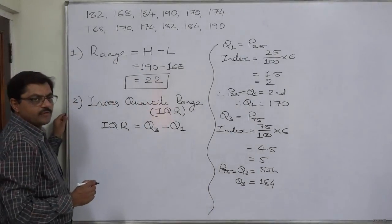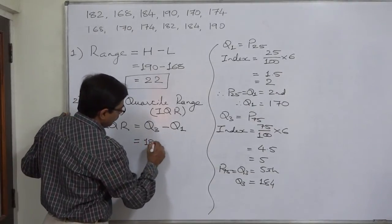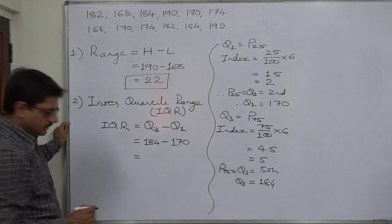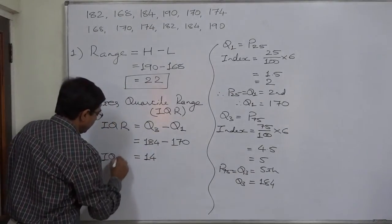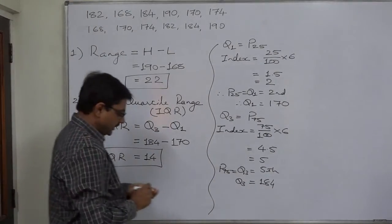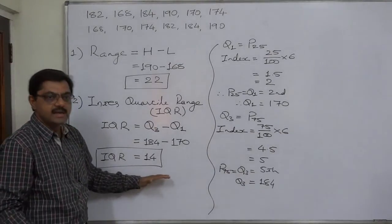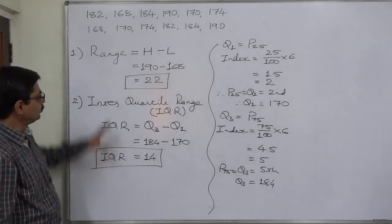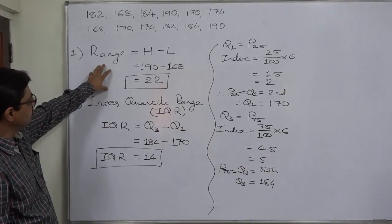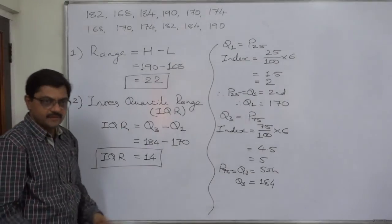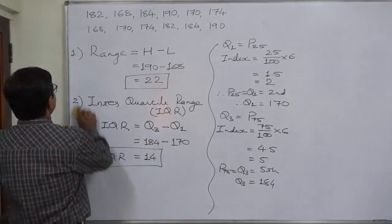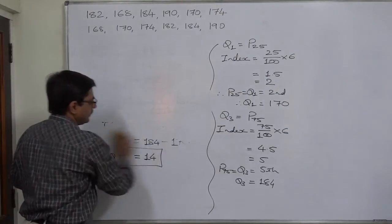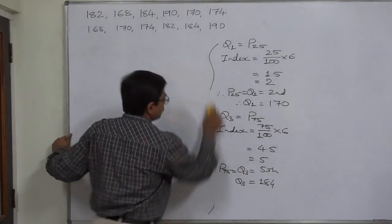Now we can find the value of IQR. Substituting 184 for Q3 and subtracting 170 as Q1, the interquartile range is 14. IQR is the difference between the highest quartile and the lowest quartile, or the range of the central 50% values. These two measures — range and IQR — are simple measures. One is the range of the entire data and another is the range of the central 50% data values.